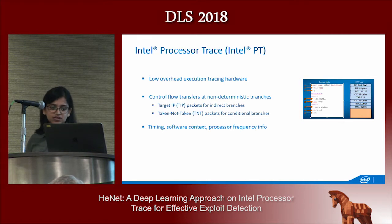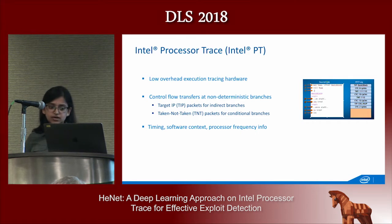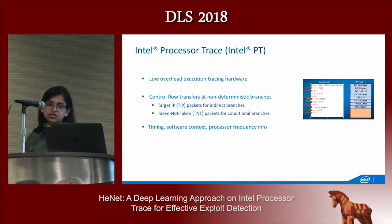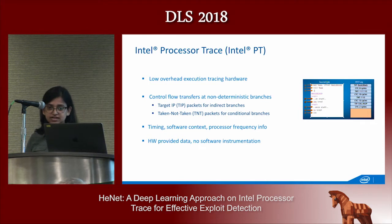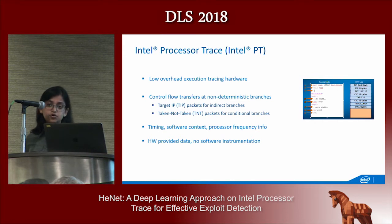Intel Processor Trace is a low-overhead debugging hardware that captures execution flow in highly compressed trace packets. It captures control flow transfers at non-deterministic branches — such as conditional branches, indirect branches, and asynchronous branches — as well as timing and other software context information. For control flow packets, it generates target IP packets for indirect branches containing the target address. For conditional branches, it generates taken/not-taken packets where each bit represents one conditional branch, and one TNT packet aggregates a number of conditional branches. The advantage is it's all hardware-provided, low-overhead data with no high software instrumentation or performance overhead, and since we use low-level hardware generated traces, it gives portability across different systems.